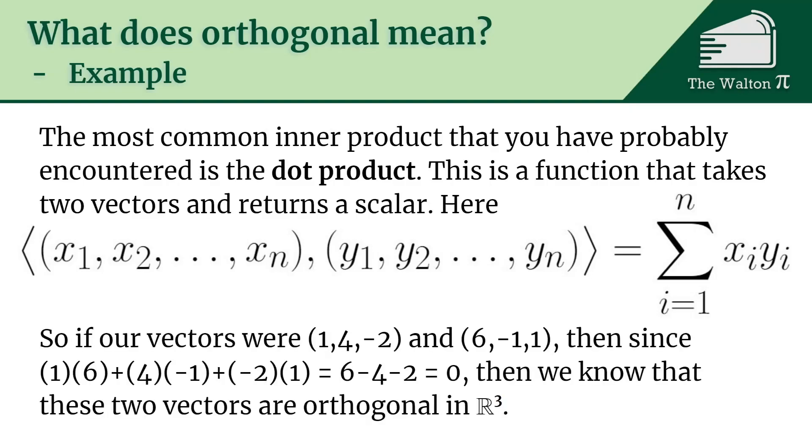If our vectors were (1, 4, -2) and (6, -1, 1), then since 1 times 6 plus 4 times -1 plus -2 times 1 is 6 minus 4 minus 2, which is 0, those two vectors are going to be orthogonal in three-dimensional space.